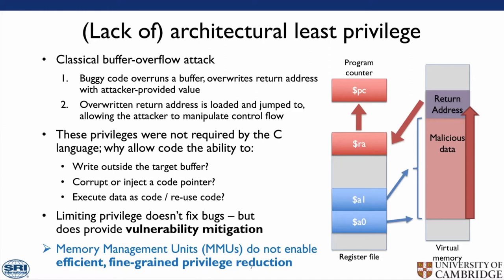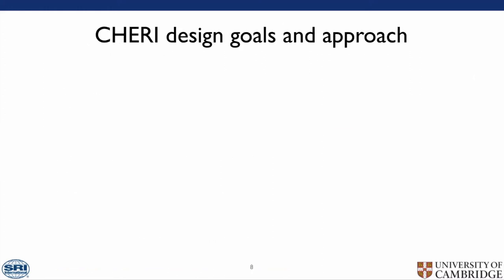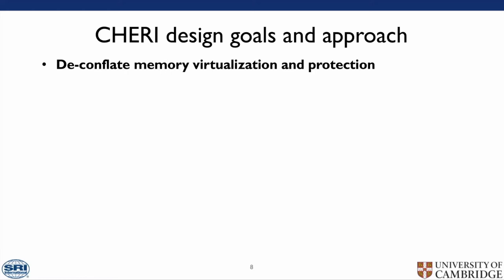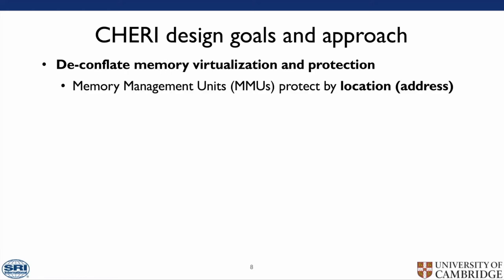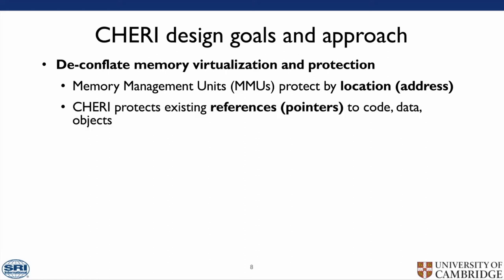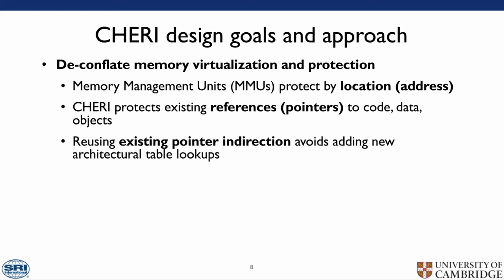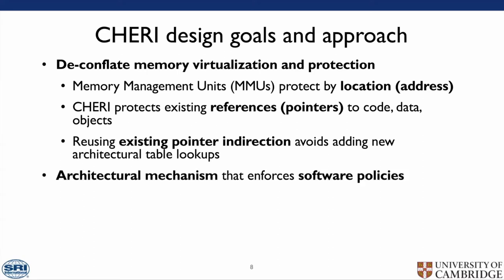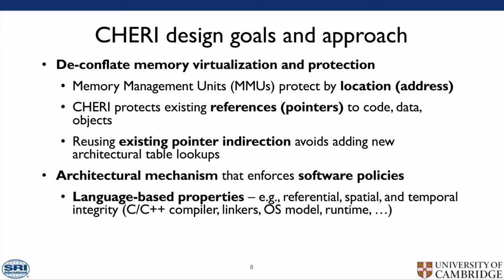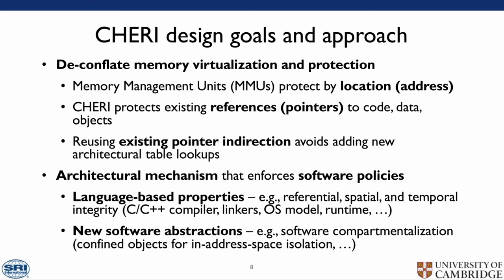Memory management units do not enable efficient fine-grained privilege reduction. CHERI's design goals include de-conflating memory virtualization and protection. MMUs protect by location or address, whereas CHERI protects by reference or pointers to code and data. We reuse the point of indirection to avoid adding new architectural table lookups. This is an architectural mechanism that enforces software policies and allows for language-based properties — referential, spatial, and temporal integrity — in C and C++ compilers, linkers, and operating system runtimes. It allows for new abstractions such as software compartmentalization and confinement of objects for in-address-space isolation.